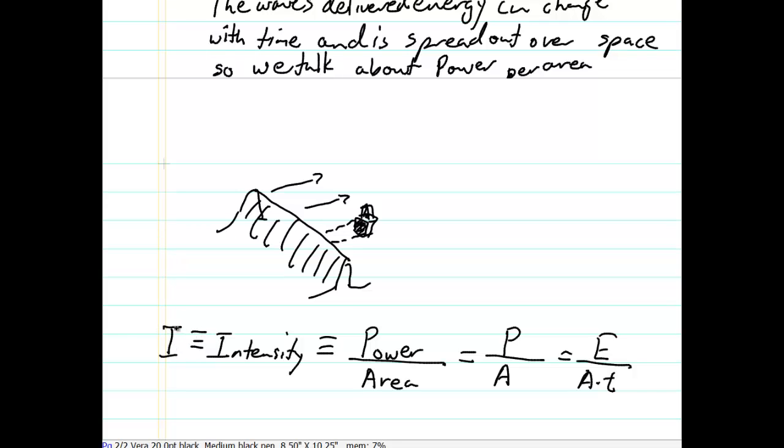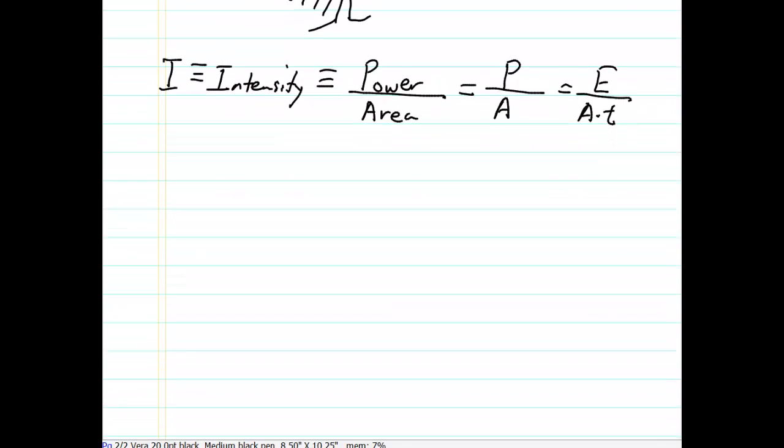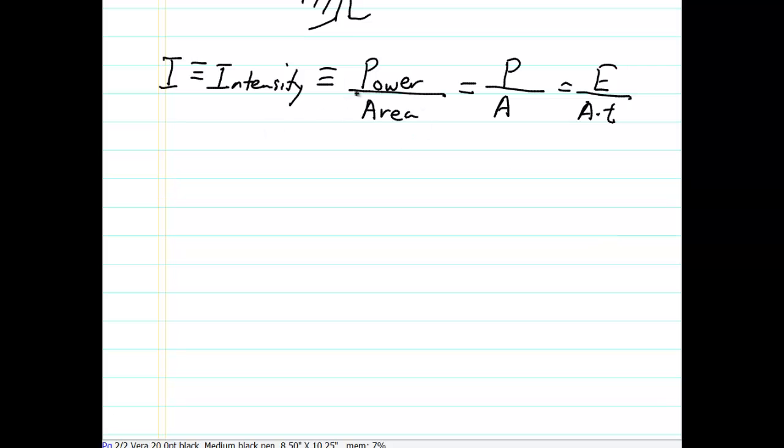So when we talk about how bright a light is, we're talking about its intensity, that is its power per area. And that's how we relate various light sources. How much total power it delivers to our eyes depends upon the brightness, the so-called light, and it depends upon the area of your eyeball.